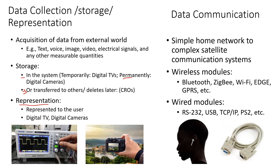Data communication is one of the most essential parts of embedded systems, ranging from simple home network routers to advanced satellite communication. There are two types: wireless — including Bluetooth, ZigBee, Wi-Fi, EDGE, GPRS — and wired — including RS-232, USB, TCP/IP, and I2C.